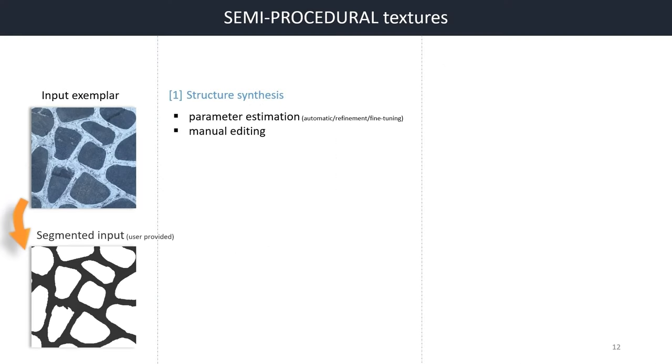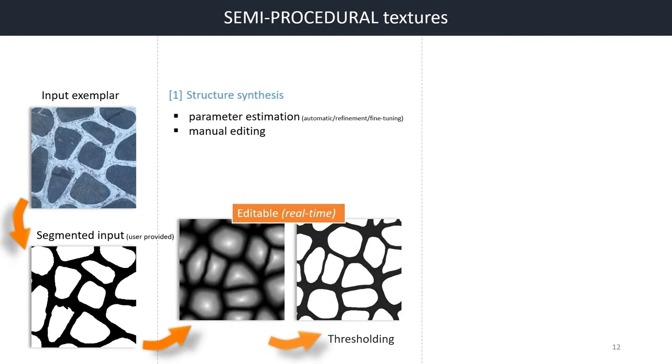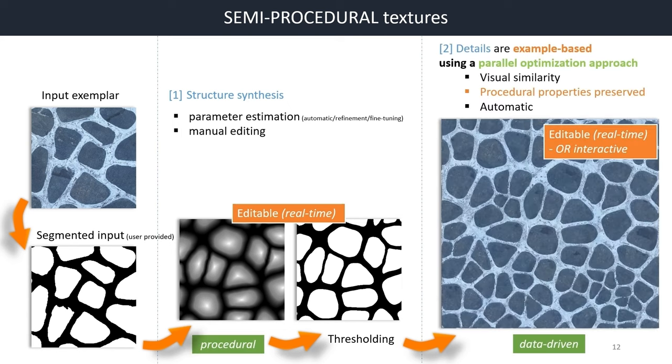Here is our pipeline. From an input image, we are able to find the closest procedural model, by different kind of techniques. And in a second stage, the details are example-based, using a parallel optimization approach, constrained by the procedural structures, which guarantees visual similarity, preserves the procedural properties and is automatic.